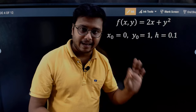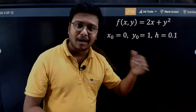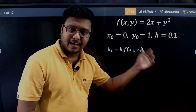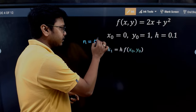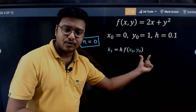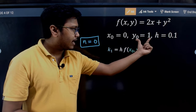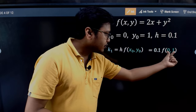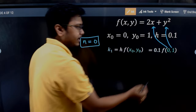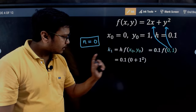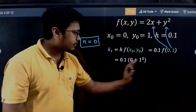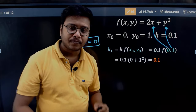We start by finding k1. The formula is k1 = h · f(x_n, y_n). For n = 0, that's h · f(x0, y0) = h · f(0, 1). Plugging in: 2(0) + 1² = 0 + 1 = 1. Multiplying by h = 0.1, we get k1 = 0.1.